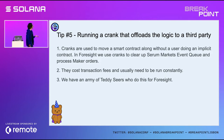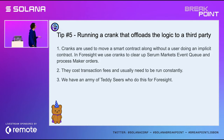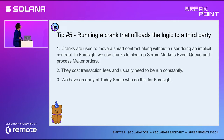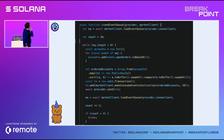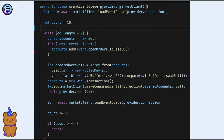There are some downsides: you need people to run the cranks constantly, and you need to pay transaction fees every time, which get quite costly. People who run cranks need to be monetarily rewarded — otherwise why would you spend money for no reason? At Foresight, we have a bunch of little Teddy Bears at the bottom that do it for us. Here's an example of the Serum crank. The only difference with ours is we have a custom consume events instruction — you can see it at tx.add — which also settles the market orders for us.